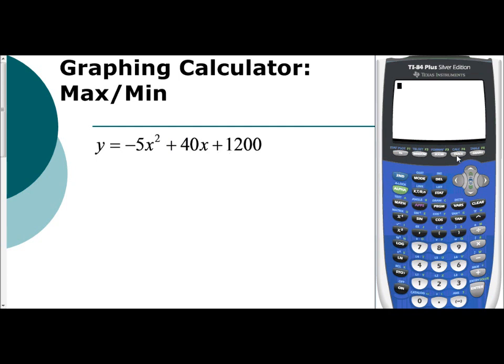The example we're going to use is y equals negative 5x squared plus 40x plus 1,200. So the first thing you want to do in your graphing calculator is input this in your y equals. Now before I hit graph, I want to examine this function.